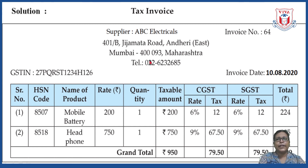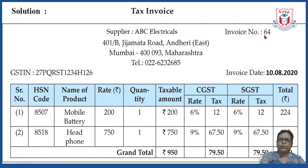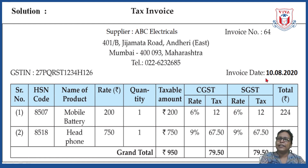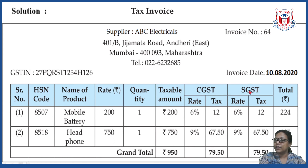For the invoice header: the supplier is ABC Electricals (since mobile accessories are involved — you can write any name). Add the complete address, telephone number, and email ID. Invoice number: 64 (as an example). The GST identification number consists of 15 alphanumeric characters. Invoice date: 10/8/2020 (you can take any date). Columns include: serial number, HSN code, name of product, rate (value of one piece), quantity, and taxable amount.